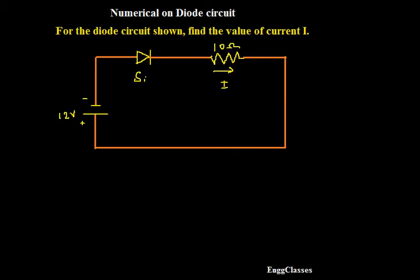Hello everyone, welcome to NG Classes YouTube channel for a video lecture series on basic electronics. In this video we will consider a numerical on diode circuit. For the diode circuit shown, find the value of the current I. That is the task given and this is the circuit shown, wherein the supply voltage is 12 volts.